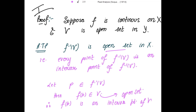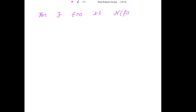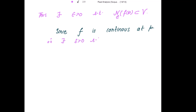For f(p) to be the interior point of V, we must define a neighborhood of f(p) that is a subset of V. Thus there exists epsilon positive such that the neighborhood of f(p) with radius epsilon is a subset of V. Now since f is continuous at p, using the definition of continuity, the metric distance of f(x) and f(p) in Y is less than epsilon for metric distance of x and p in X less than delta.